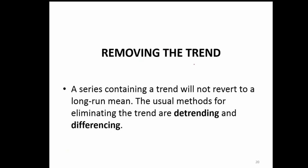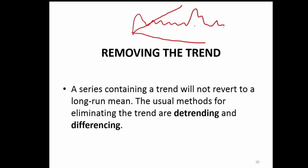So, how do you remove the trend from a series? A series containing a trend will not revert to its long-run mean. If a series has some kind of a trend — either upward or downward — it is never going to come back to the mean. But that is what is needed for forecasting. So, the usual methods for eliminating trend are detrending and differencing — either you detrend or you difference.